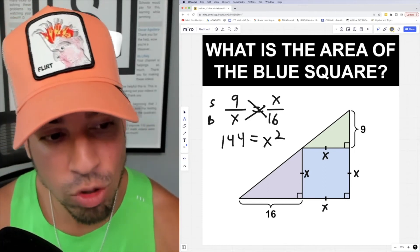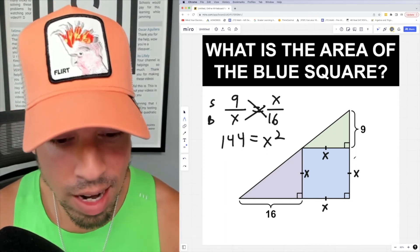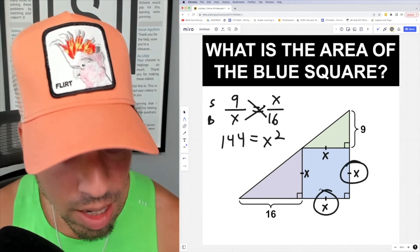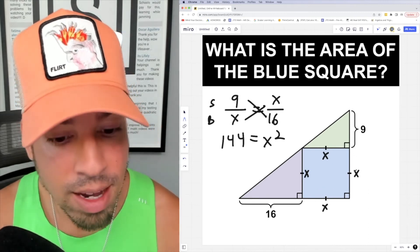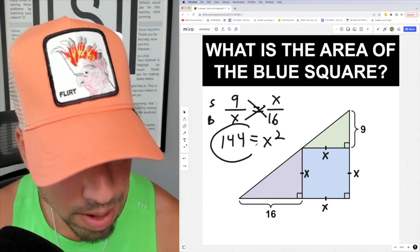But remember, this question is asking for the area of the blue square. That's important because area is side length times side length, aka in this case x times x or x squared, meaning this 144 is in fact the final answer.